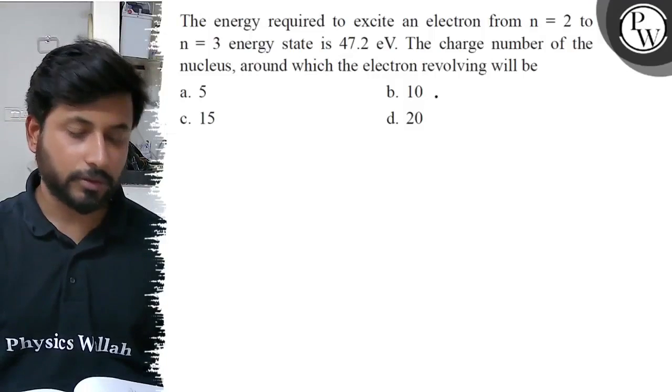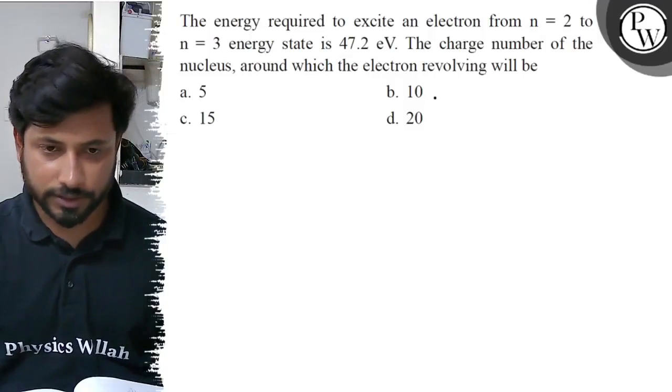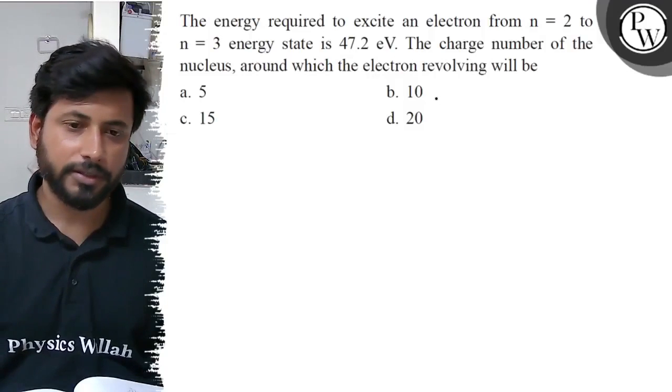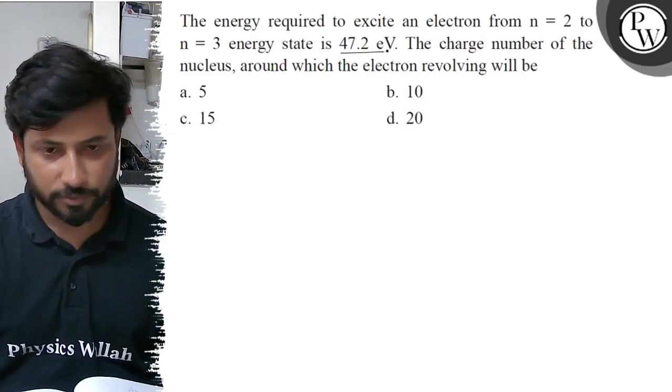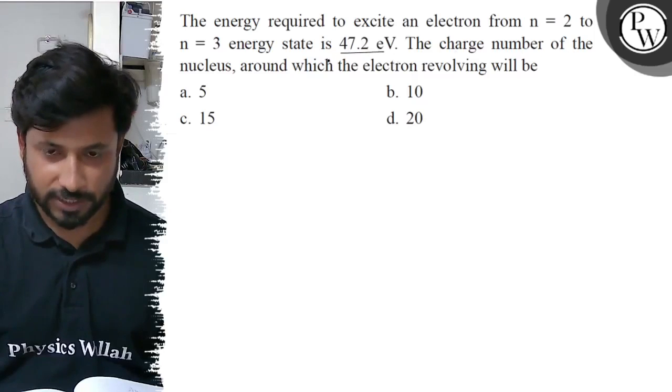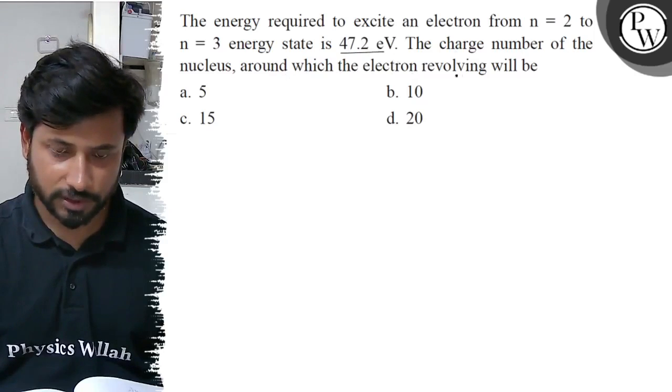Hello everyone, let us see this question. The question says that energy required to excite an electron from n equals 2 to n equals 3 energy state is 47.2 electron volts. The charge number of the nucleus around which the electron is revolving will be: